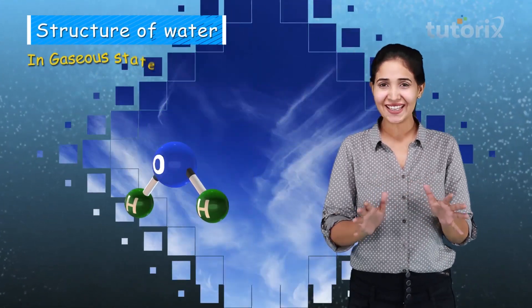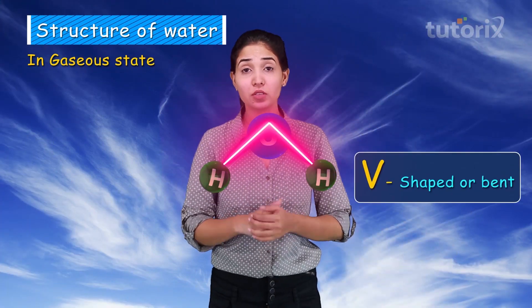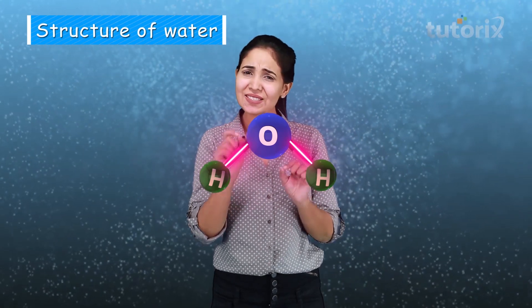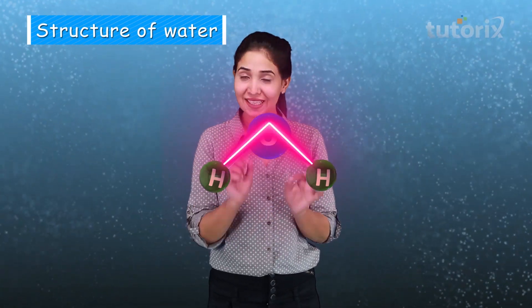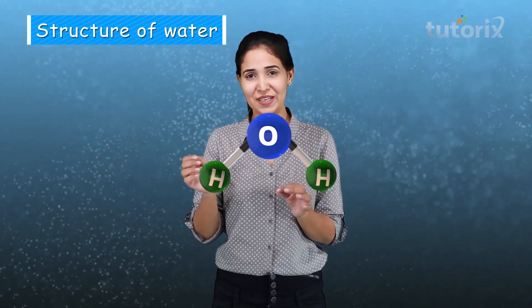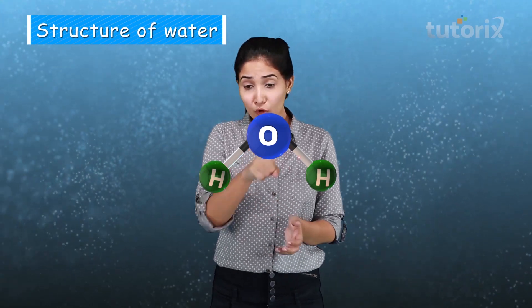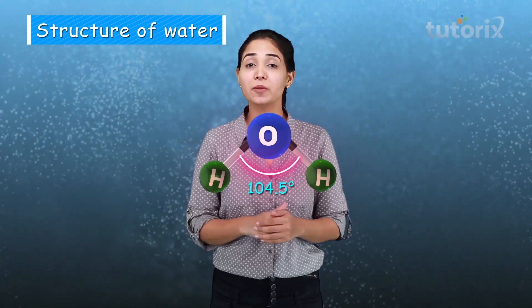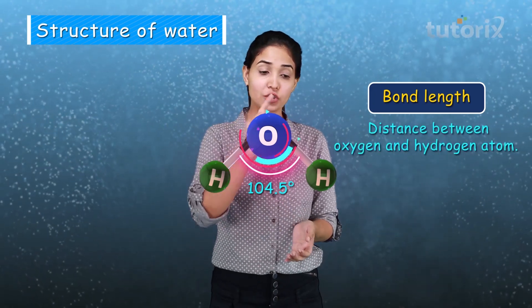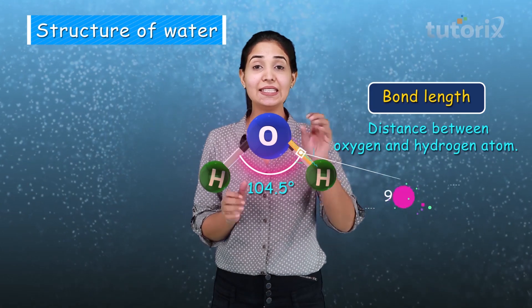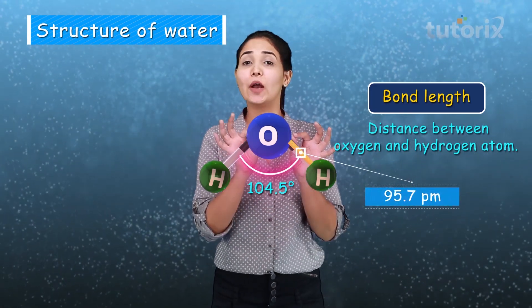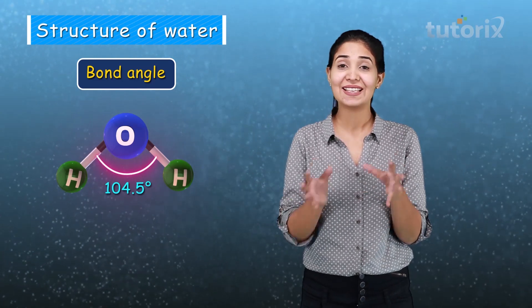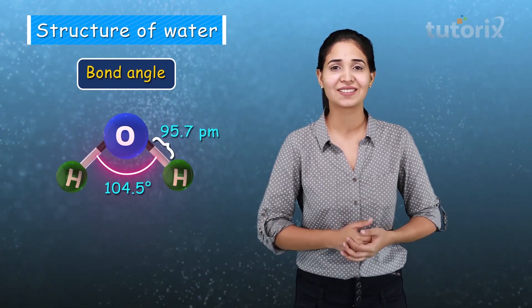Now, the structure of water in the gaseous state: we observe a V-shaped or bent structure. The oxygen atom is attached to two hydrogen atoms in the shape of the letter V. The bond angle is always found to be 104.5 degrees, and the bond length — the distance between the oxygen and hydrogen atom — is 95.7 picometers. These are the two things to memorize: bond angle 104.5 degrees and bond length 95.7 picometers.